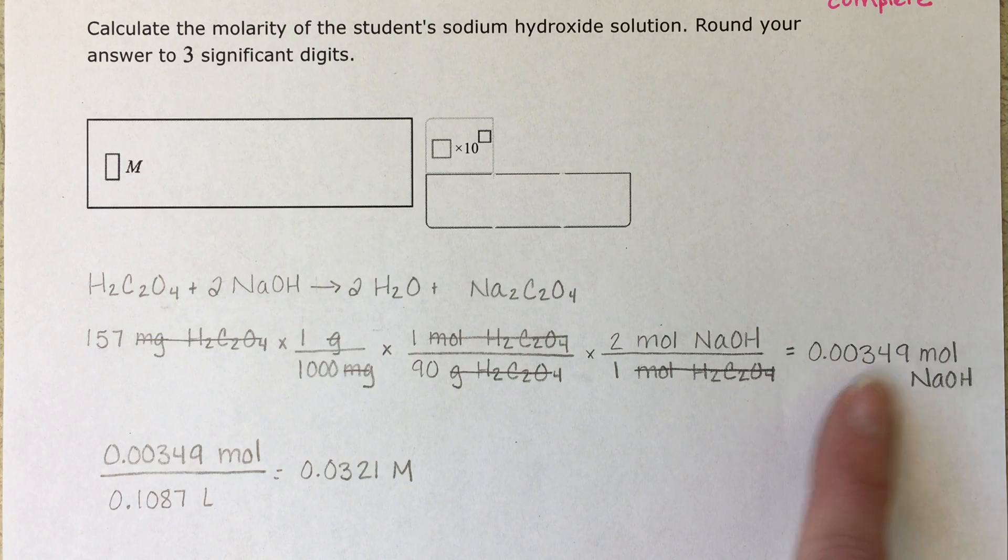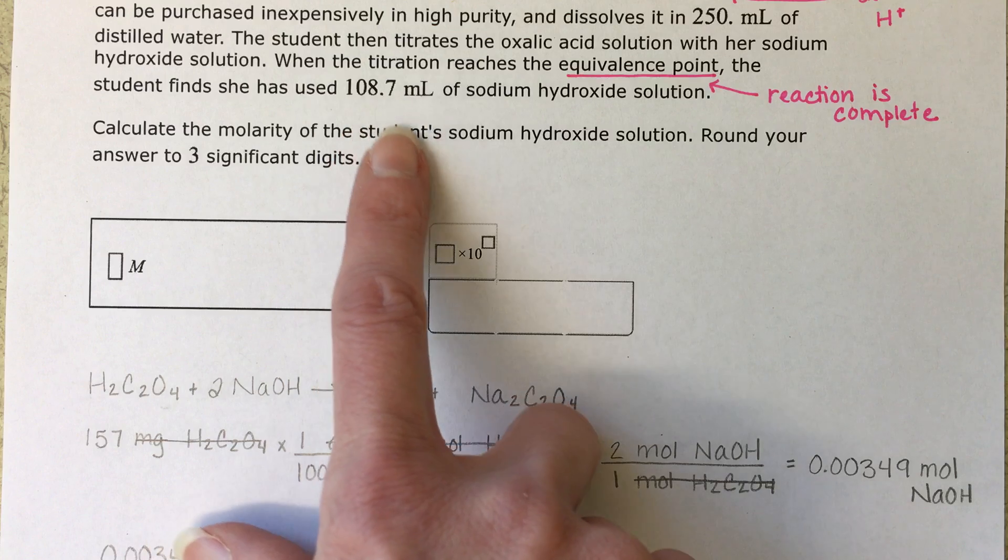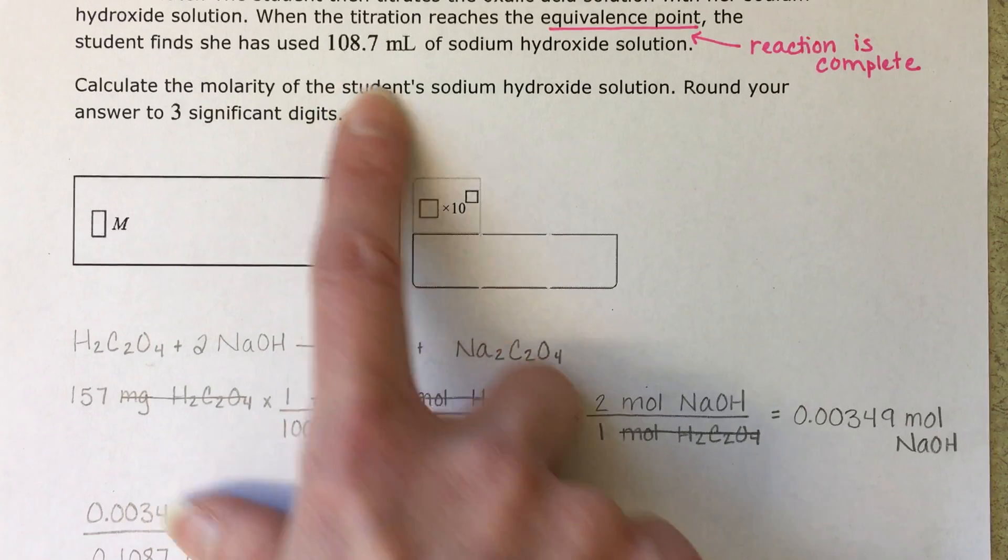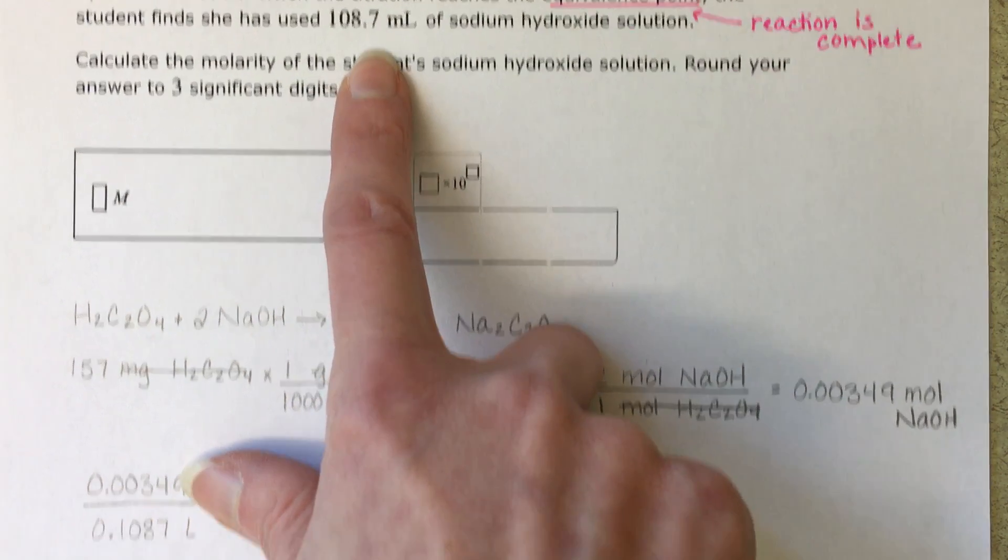Once I know the amount of sodium hydroxide in moles, I can calculate the molarity. The problem is telling me that we used 108.7 milliliters of solution. So I know that I have this many moles in 108.7 milliliters.